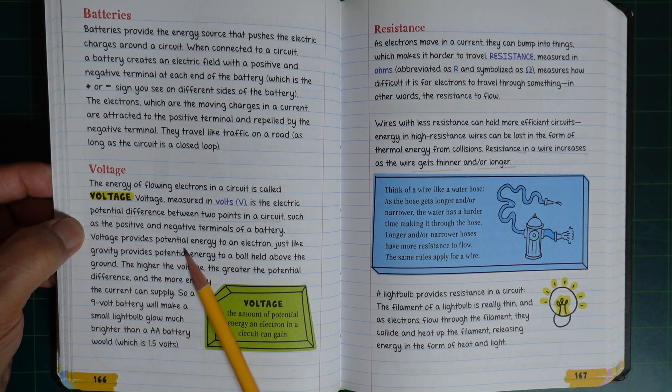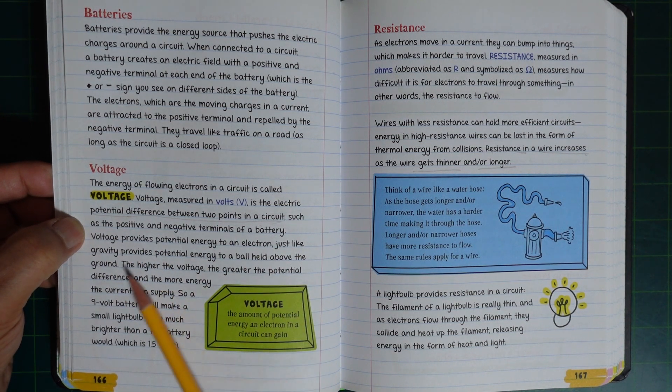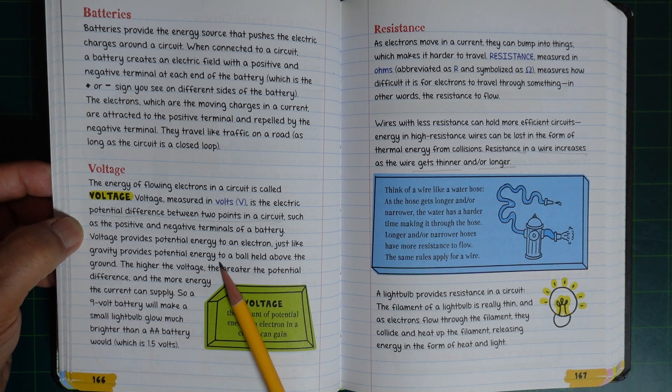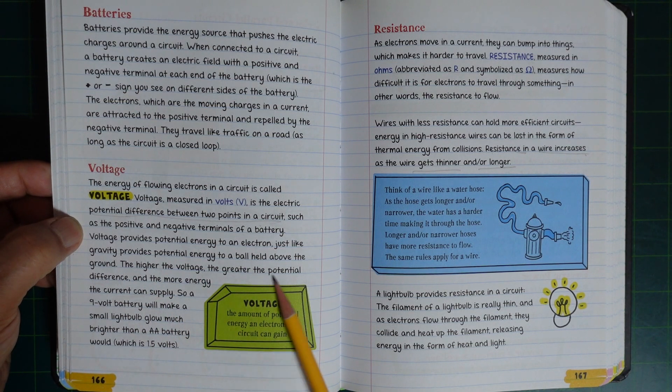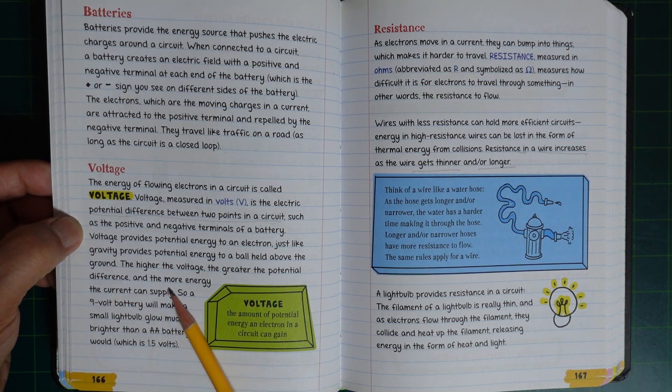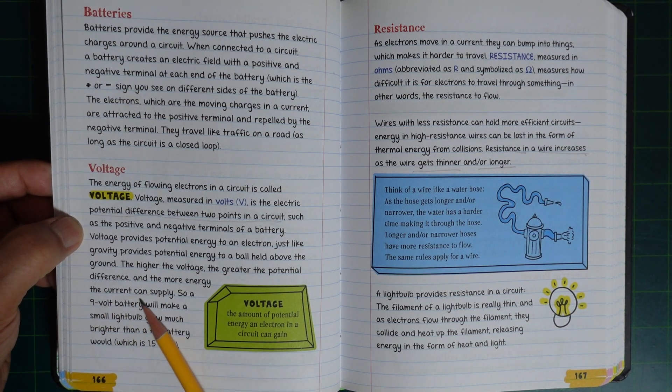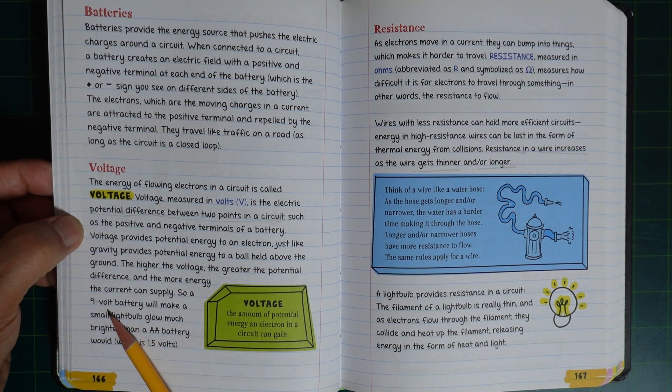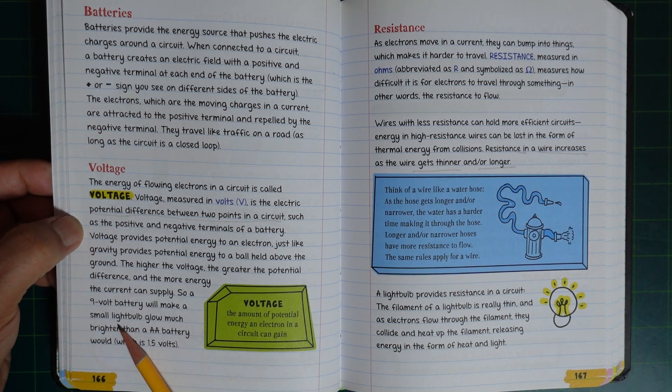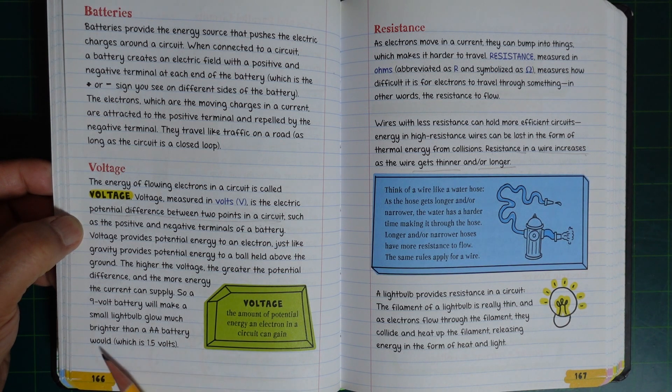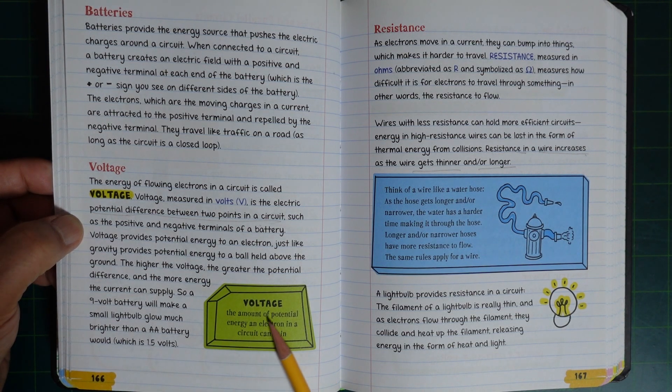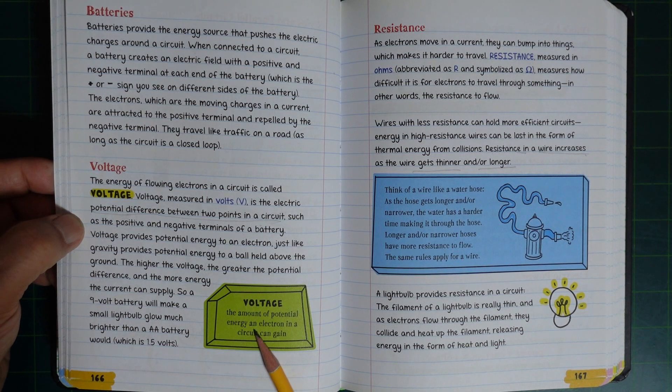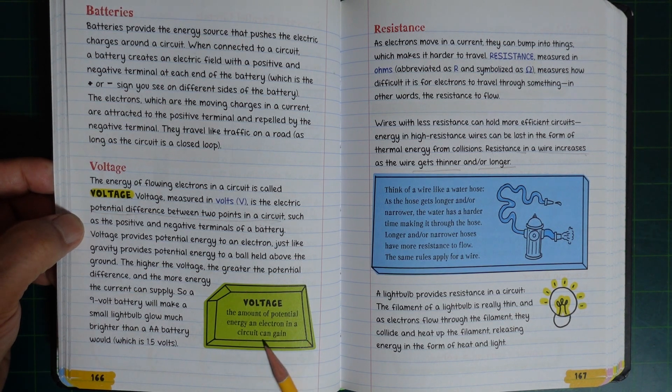Voltage provides potential energy to an electron, just like gravity provides potential energy to a ball held above the ground. The higher the voltage, the greater the potential difference and the more energy the current can supply. So a 9V battery will make a small light bulb glow much brighter than an AA battery which is 1.5V. Voltage is the amount of potential energy an electron in a circuit can gain.